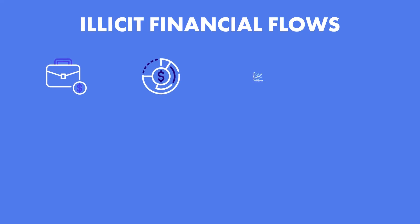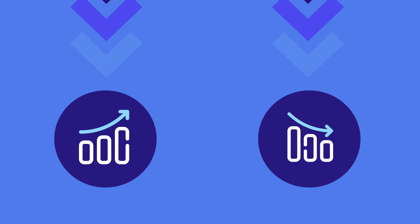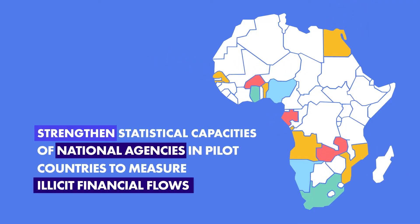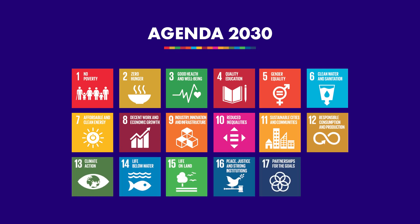The intent is to develop separate estimates for the different types of illicit financial flows so that they can serve different policy needs and provide the different analysis for policy development. The main objective of the project is to contribute to strengthening statistical capacities of national agencies in pilot countries to measure certain types of illicit financial flows, in order to report on the Agenda 2030 for sustainable development and support policy actions to curb IFF in the pilot countries.